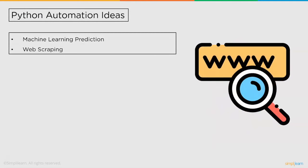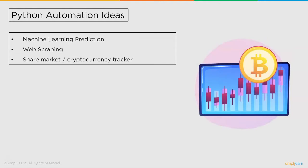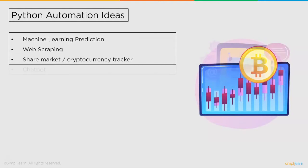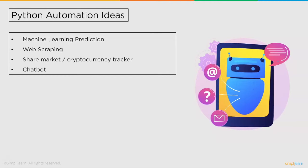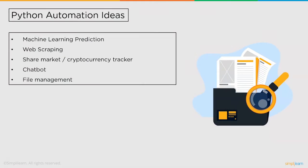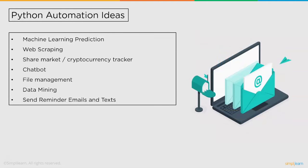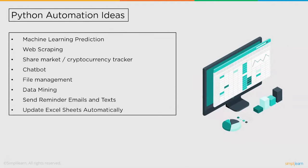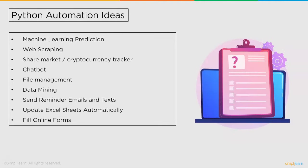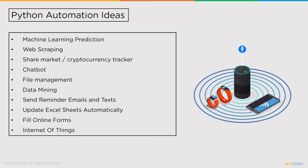Then we look into web scraping, another popular application for Python Automation. Python is also used for tracking stock market and cryptocurrency prices. After that, we will discuss chatbots, increasingly popular for customer service experience. File management automation is common in workplaces, mostly powered by Python. Data mining also employs Python for structuring data. Another good automation idea is to automate sending reminders, emails, and text messages. Excel spreadsheets can also be read and modified using Python. Python is also used to automate filling up of online forms. Finally, we will go through the concept of Internet of Things and how Python is used in that field.